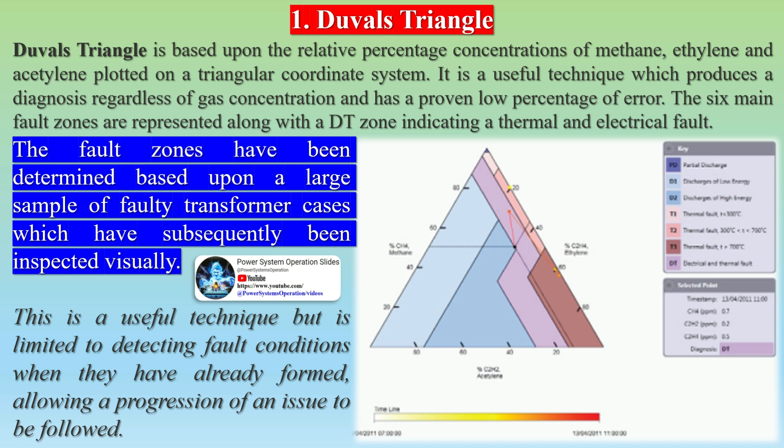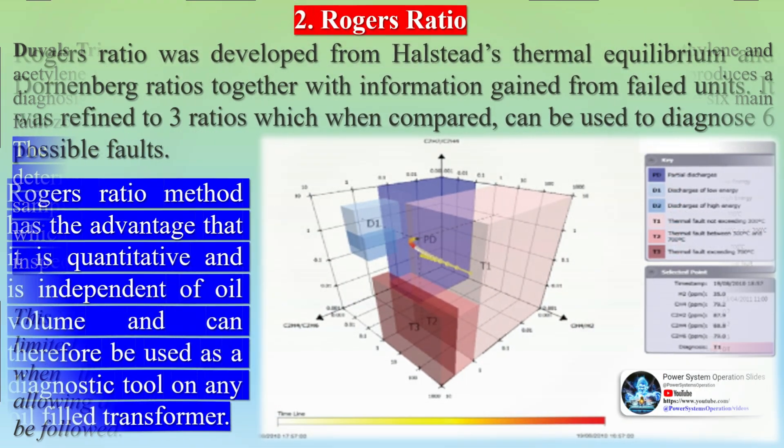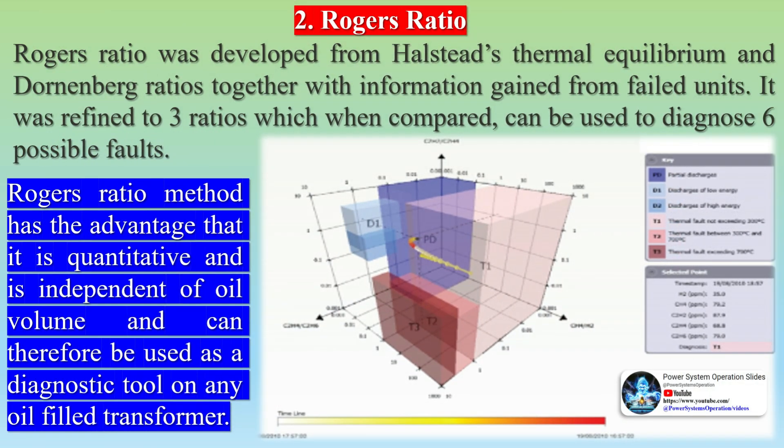As a diagnostic tool, multiple methods of diagnosis have been developed, shown in standards such as IEEE C57.104 and IEC60599, which allow users to relate measured gas-in-oil concentrations to potential ongoing or developing faults. Duvall's triangle is based upon the relative percentage concentrations of methane, ethylene, and acetylene plotted on a triangular coordinate system. It is a useful technique which produces a diagnosis regardless of gas concentration and has a proven low percentage of error.